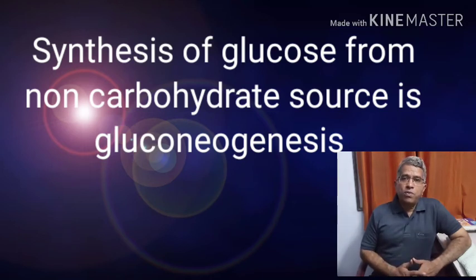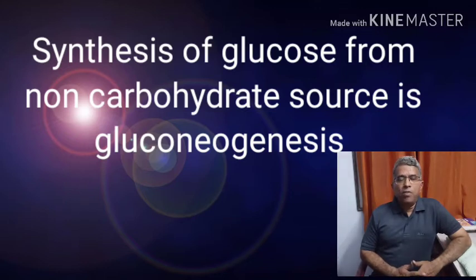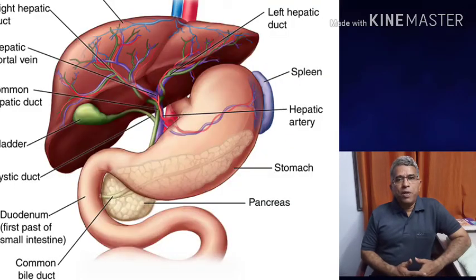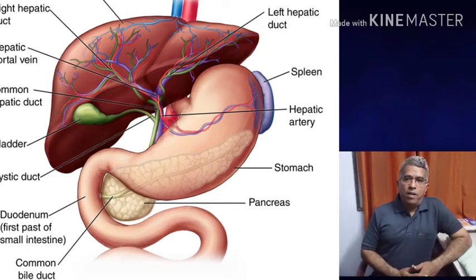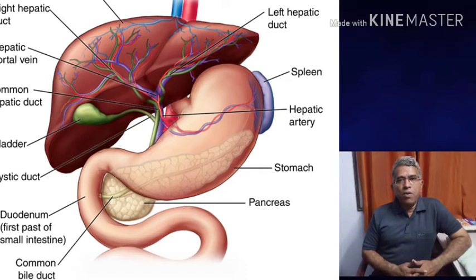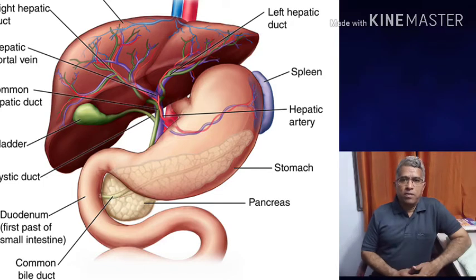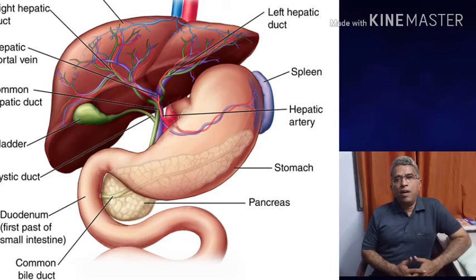Liver synthesizes vitamins A and D, and stores iron and vitamin K. Liver contains the biggest phagocytic cells, which engulf bacteria. These biggest phagocytic cells present within the liver are called Kupffer cells.